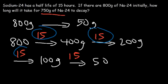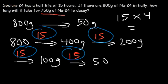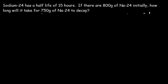Count how many half-lives that is: one, two, three, four. It took four half-lives for the sample to decay from 800 to 50 grams. So 15 plus 15 plus 15 plus 15 — the same as 15 times 4 — equals 60. It will take 60 hours for 50 grams to remain out of the original 800-gram sample.